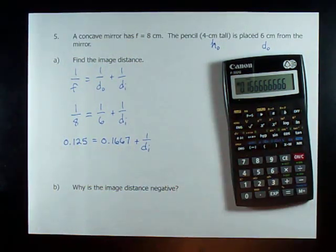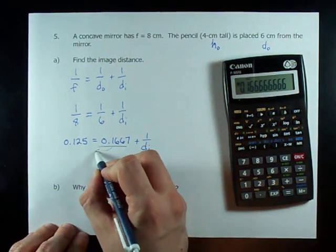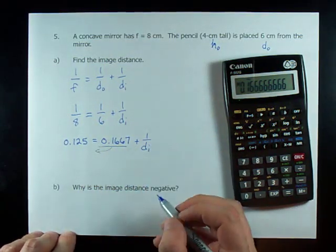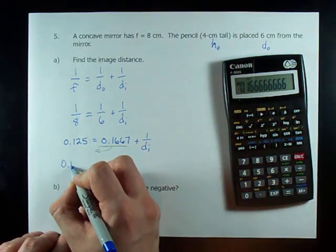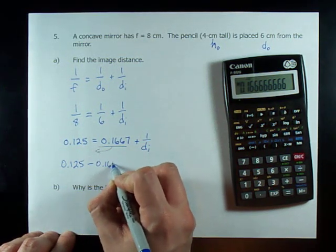Now, I need to move this 0.1667 to the other side of the equal sign. That gets me my D_I alone on this side. 0.125 minus 0.1667.